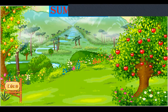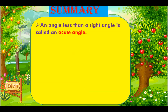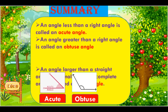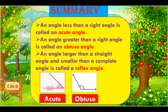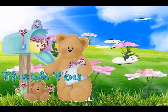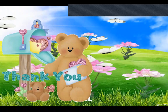Let's summarize. An angle less than a right angle is called an acute angle. An angle greater than a right angle is called an obtuse angle. An angle larger than a straight angle and smaller than a complete angle is called a reflex angle. Thank you children — please revise the concept again by looking at the PPT.